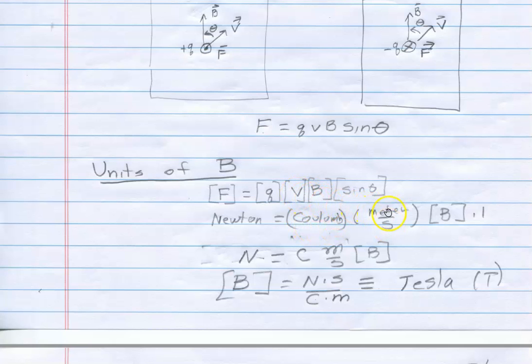I know that force in SI units is a newton, charge is in coulombs, velocity is in meters per second, a sine is just dimensionless so it doesn't have any units. And so I can deduce the units of magnetic field in our metric system that we use from this relationship. Newton, coulomb, meters per second, and then just solve this for B.